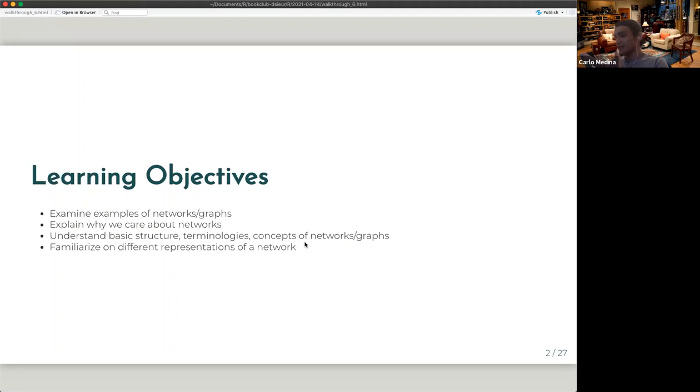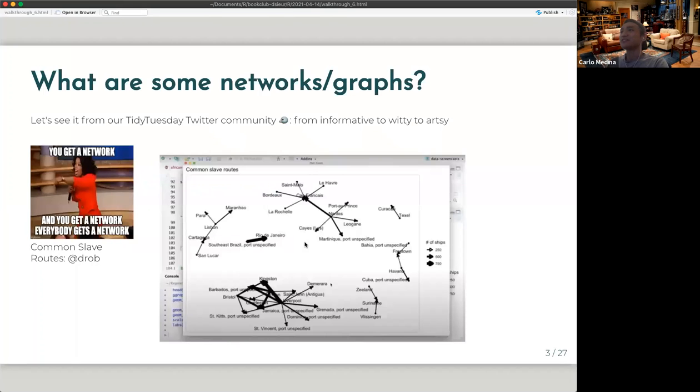So throughout this walkthrough, if you have any questions, please do feel free to interrupt me at any point in time. So first, what are some examples of networks or graphs?